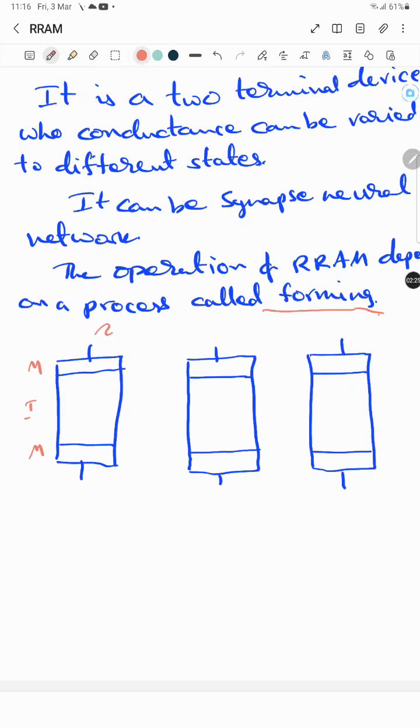In forming, a high voltage is applied to this metal-insulator-metal structure. By this, the insulator—suppose this oxide layer—will be subject to a soft breakdown, which creates oxygen vacancies in between these two metal electrodes.